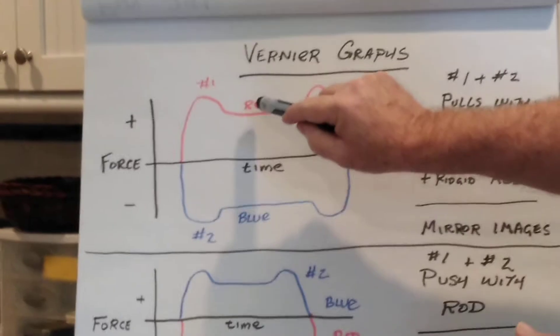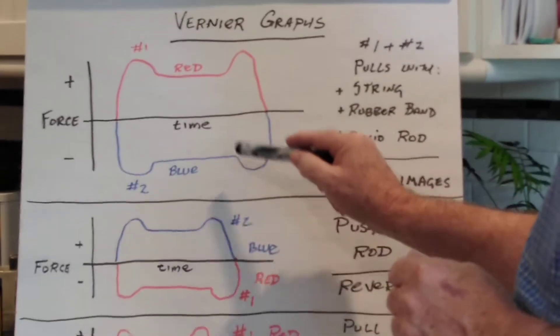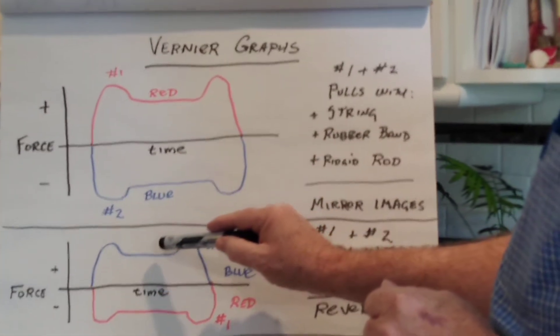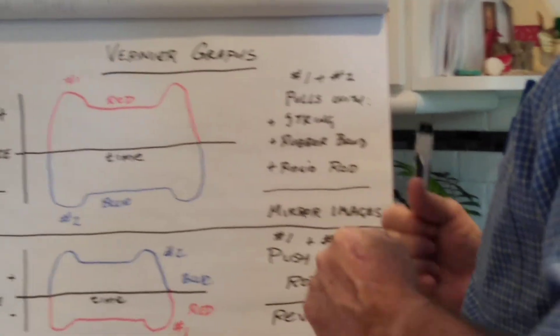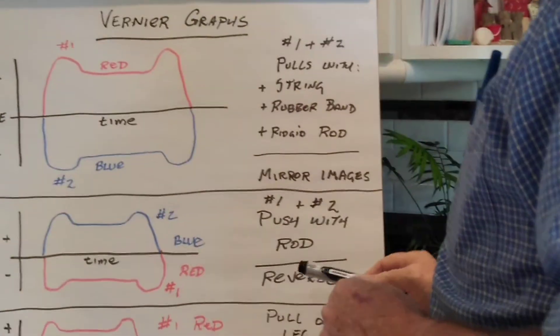The force sensor that was red, which was positive before, is now negative. And the force sensor that was negative before is now positive. So, pulling action gave us this graph, pushing action gave us exactly the opposite.